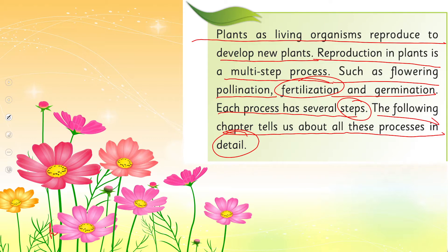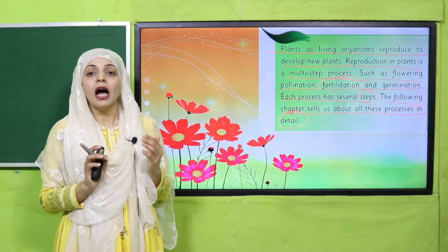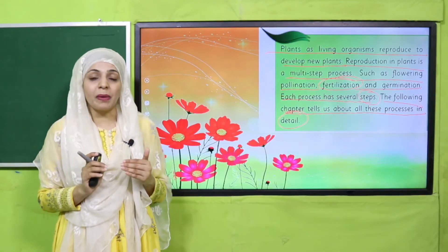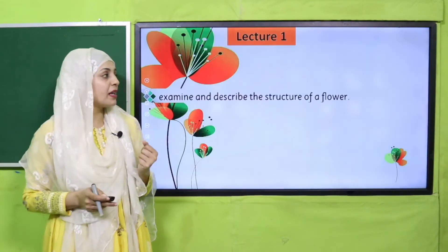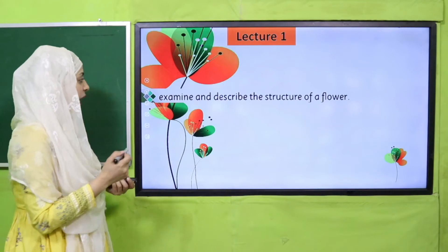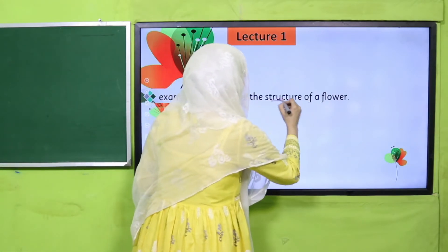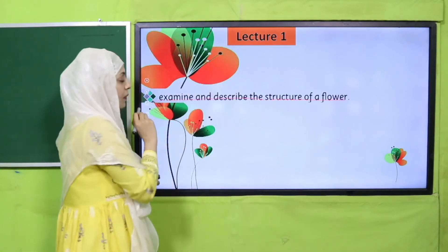Living organisms — mainly plants — reproduce to create new plants. The method of reproduction is a complex process with many steps. The seeds of plants are also very complex structures, and we will discuss all of this in this chapter. The first lecture will be about the students being able to examine and describe the structure of a flower.